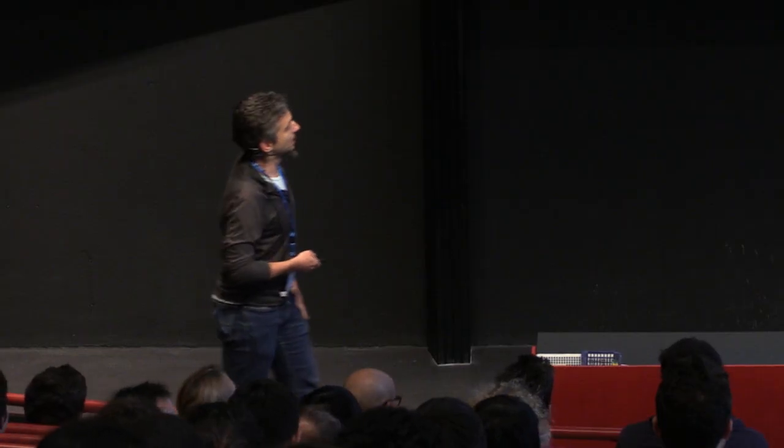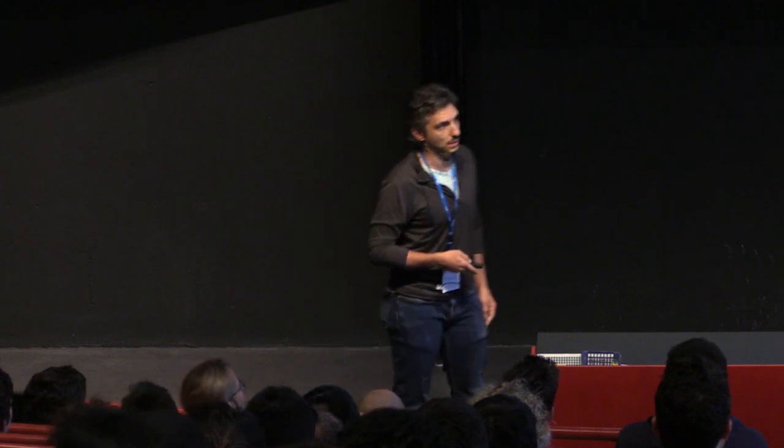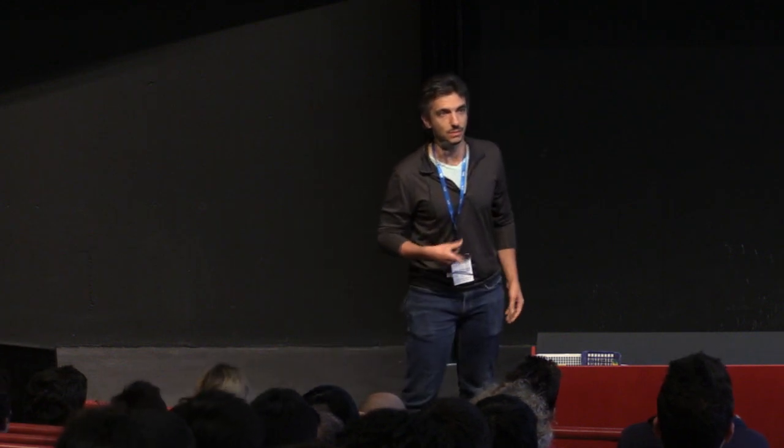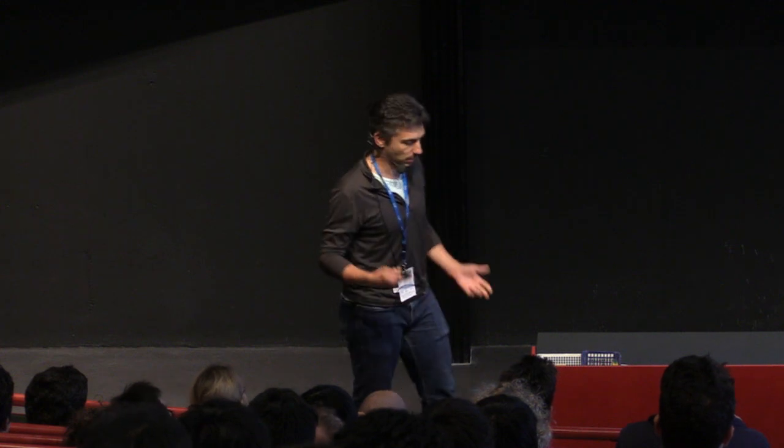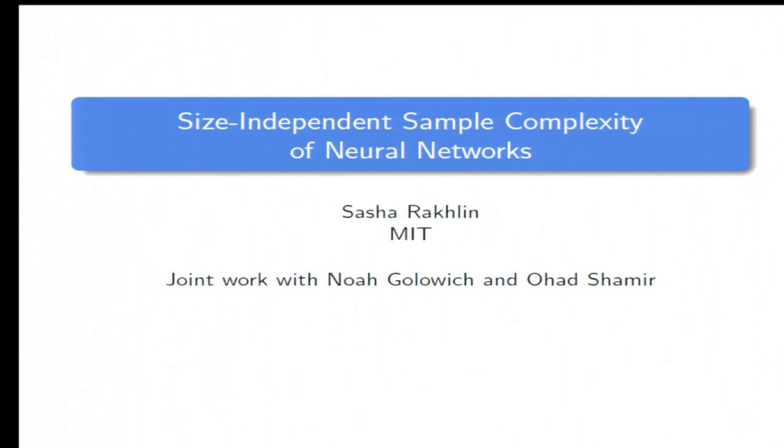And we're going to study the sample complexity of neural networks. Part of the motivation is this persistent belief within the more general ML community that somehow neural networks are magical because they're overparameterized. And of course, we know that it's not the number of parameters that matters, but some perhaps other measures of complexity. And so that's the goal to study these measures.